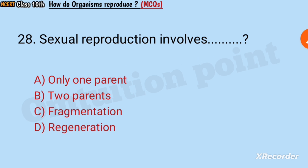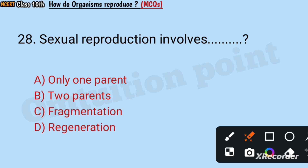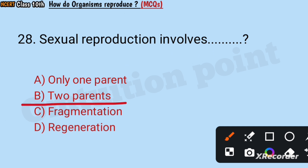Question number 28: Sexual reproduction involves only one parent, two parents, fragmentation, or regeneration? Answer: Two parents.